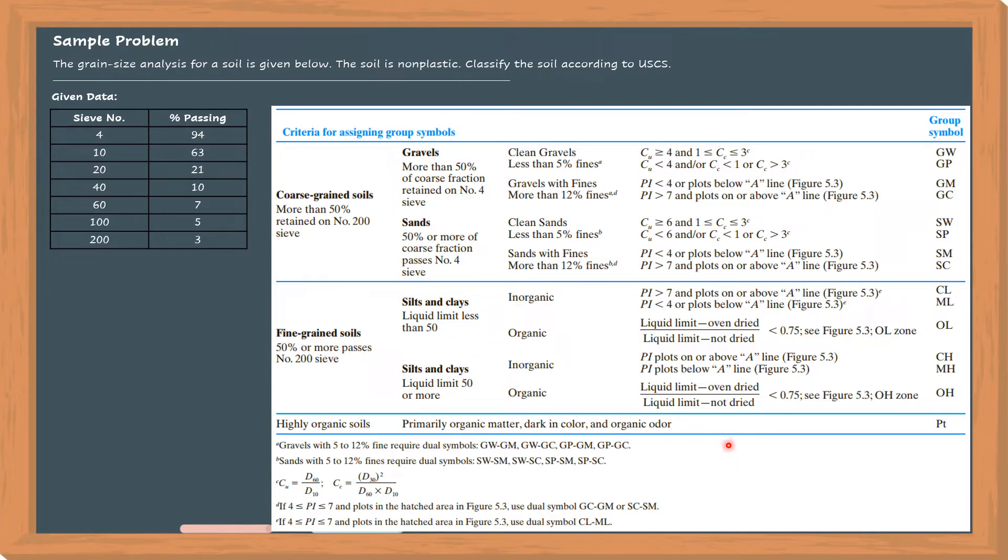From the geotechnical engineering book of Braja Das. The solution for this one is mathematical in nature. What we have to do is just use this table and sort which criteria fit from left to right. Number one: the percent passing number 200 is 3% only, hence it is a coarse grain soil.